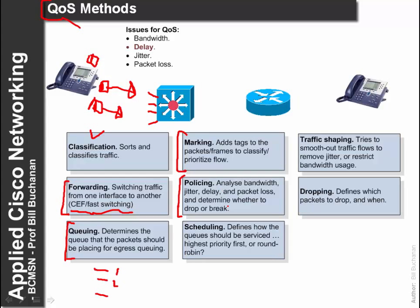We can have policing, where we define that different data streams have different bandwidth throughputs and can drop lower-priority data packets. We can have different scheduling — a round robin queuing system going from one queue to another, or a prioritisation where we always take data from the highest priority queue. Then we can have traffic shaping to smooth out traffic, remove jitter or reduce excessive bandwidth usage. We can also define which data packets to drop — typically we might want to drop data packets but allow voice packets to go through.